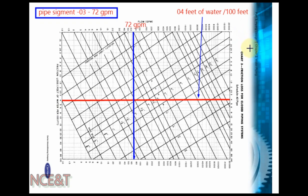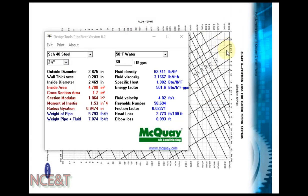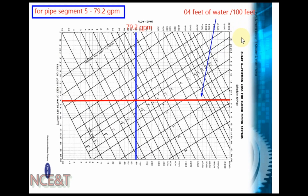For pipe segment 3 with 72 GPM, we draw a blue line at 72 GPM and a red line at 4 ft water gauge per 100 feet friction loss limit. These two lines intersect after the 2 inch pipe size, so we select the next size: 2½ inch. Confirmed in MACQA software: at 2½ inch with 72 GPM, head loss is 3.894 ft/100ft, which is less than 4 and acceptable. So pipe segment 3 is 2½ inch.